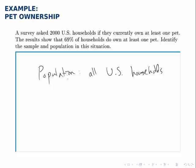Because it's infeasible to study all households in the U.S., we take this sample of 2,000 households. We gather data from them, and we use that to draw inferences about the entire population.